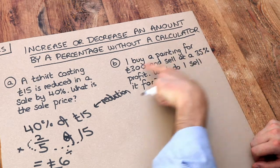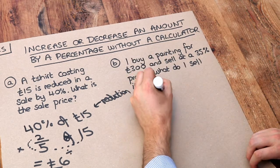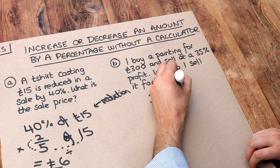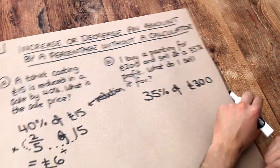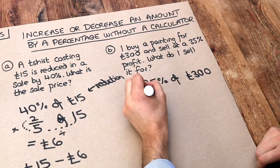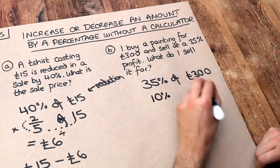Well again, let's find out what 35% of the amount is first. We want 35% of £300. Now I'm going to use the other method this time rather than converting this to a fraction.